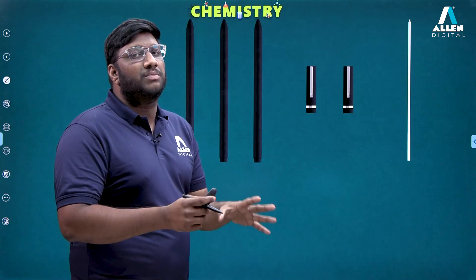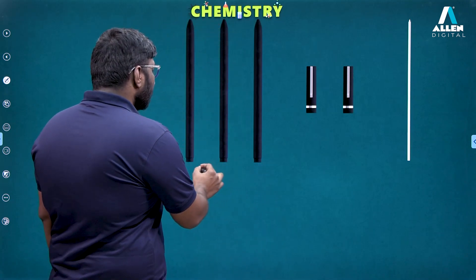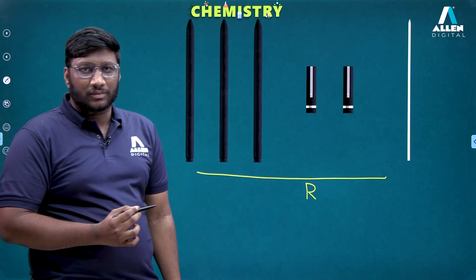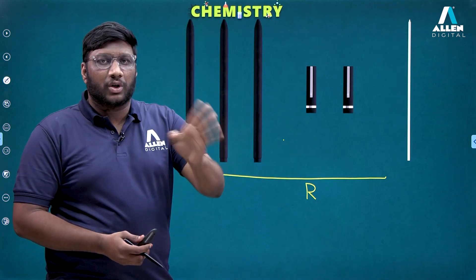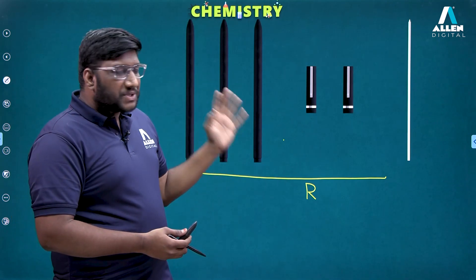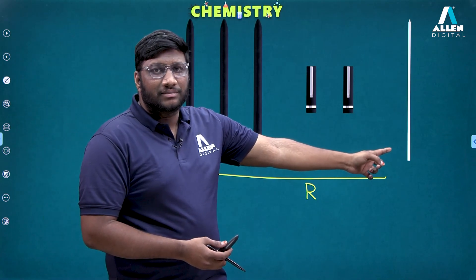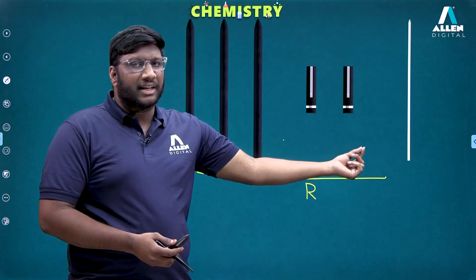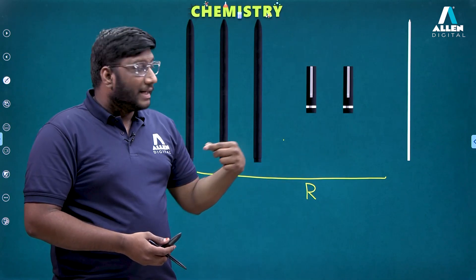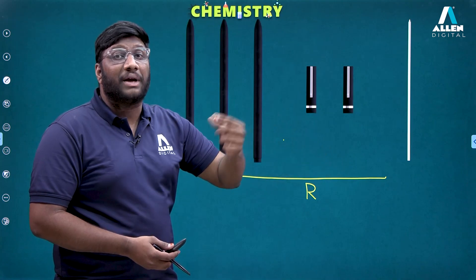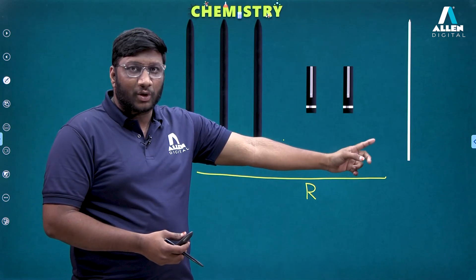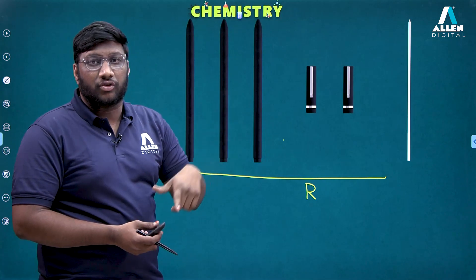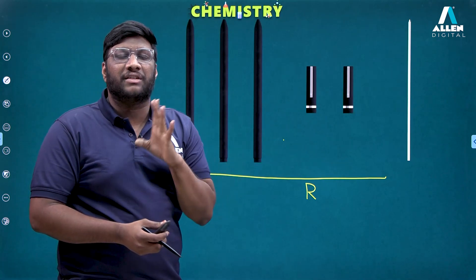Understand the same concept with respect to a chemical reaction. Imagine all these components are reactants and the pen is the product. The substance which is taken in lesser quantity is deciding the product formation. Here the refill is taken in lesser amount — only one refill — and that is deciding how many pens are formed. If you had only one refill, because it is lesser, we get only one pen.